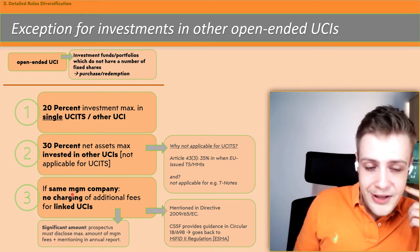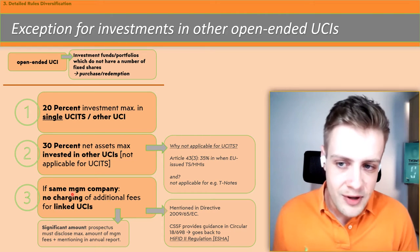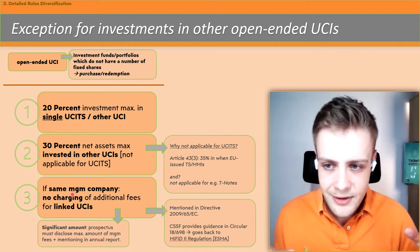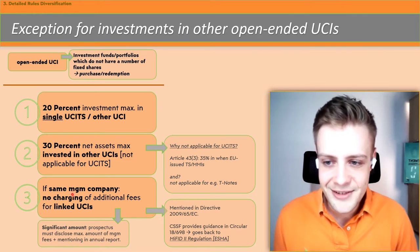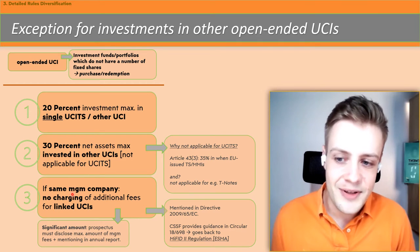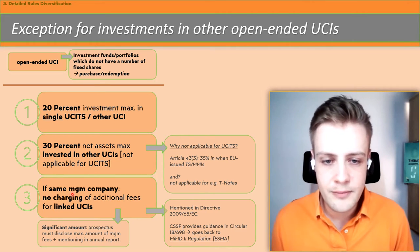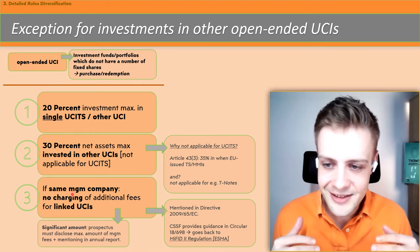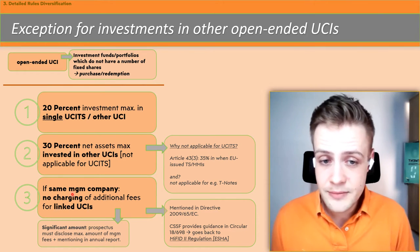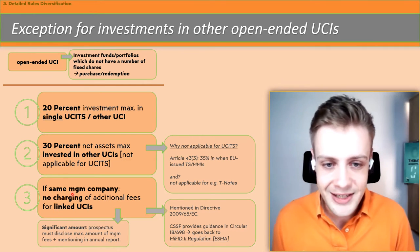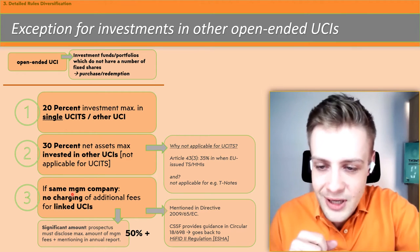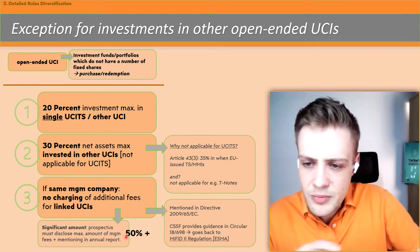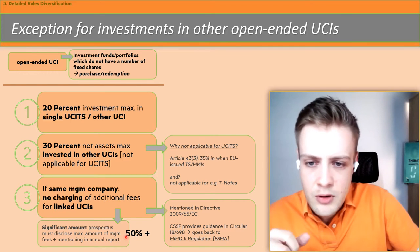As a recap: first, remember 20% investing maximum in a single UCI. Second, 30% net assets invested in other UCIs. And then, additional fees for linked UCIs — no charge below 50%. If it's more than 50%, yes, you can charge additional fees. Everything below, no charge.